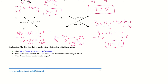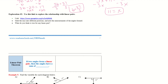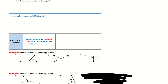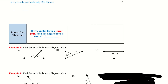Exploration number 2 — if you want to take a second to try this one out, feel free to pause and try it. Linear pair theorem: if two angles form a linear pair, then the angles have a sum of 180 degrees. So if this is our linear pair, angle A plus angle B equals 180 degrees — add them together, they equal 180.